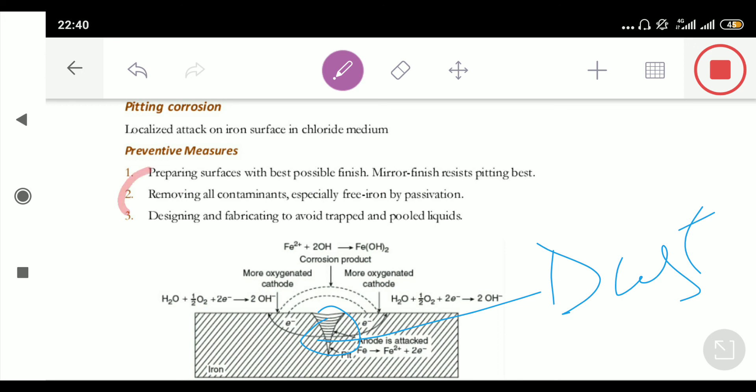Second, by removing all the impurities, especially chloride. Similarly, we will have to design the iron or the metallic piece in such a way that is having very less number of bends and joints. Because those bends and joints can act as a pit. Right? So, that is all about the pitting corrosion.